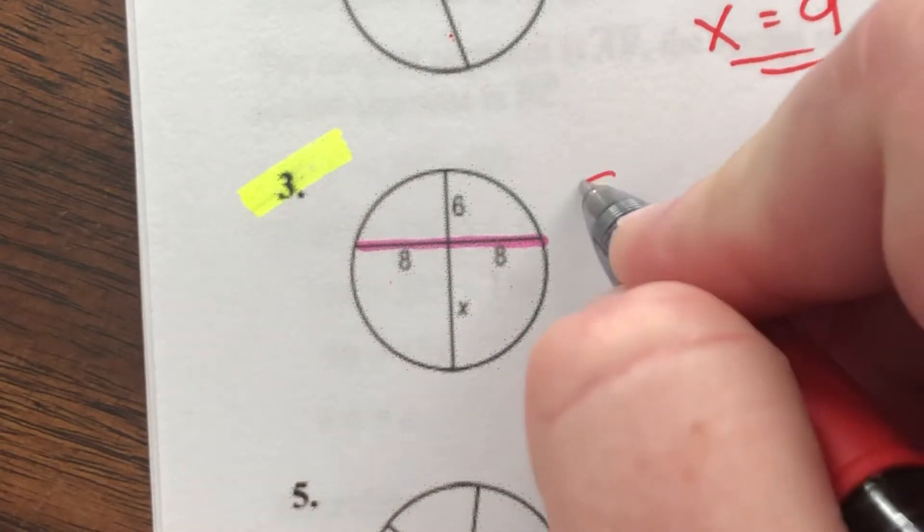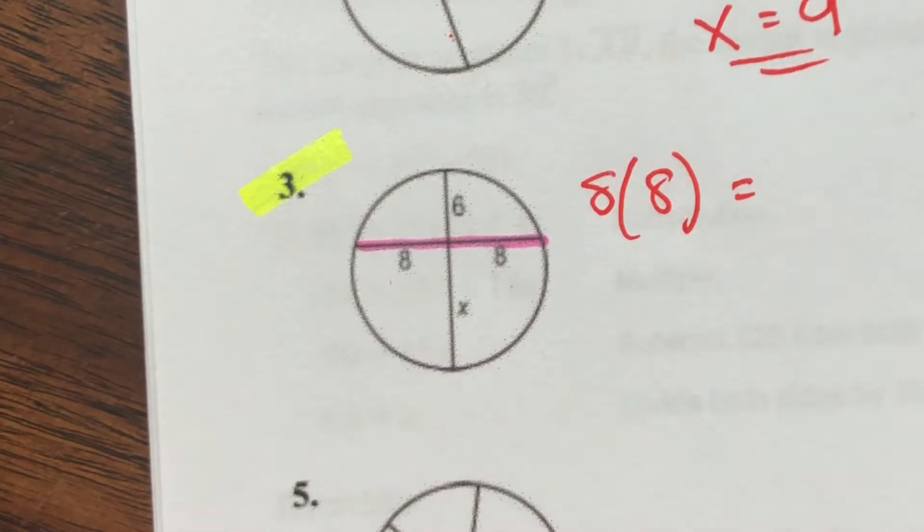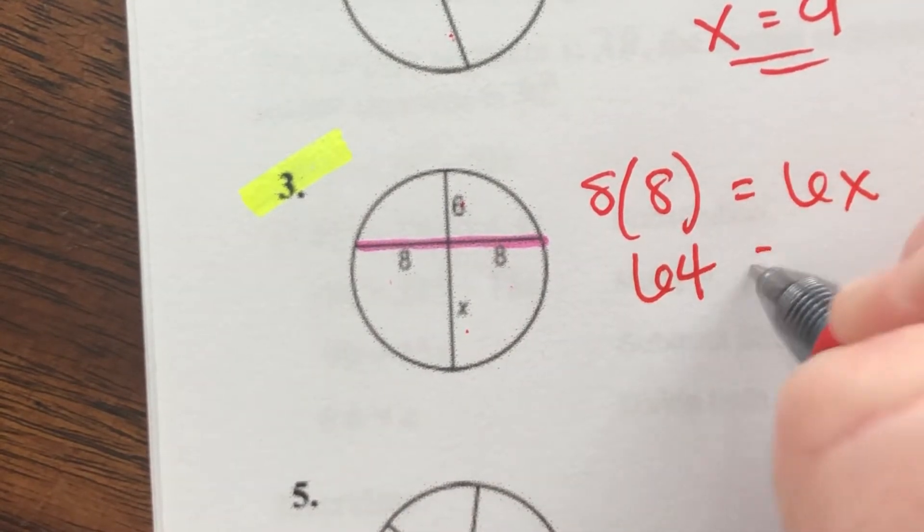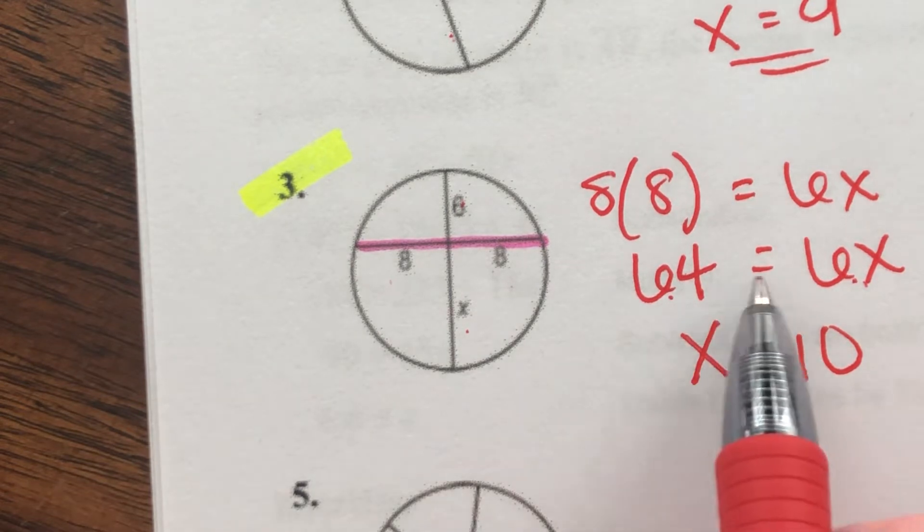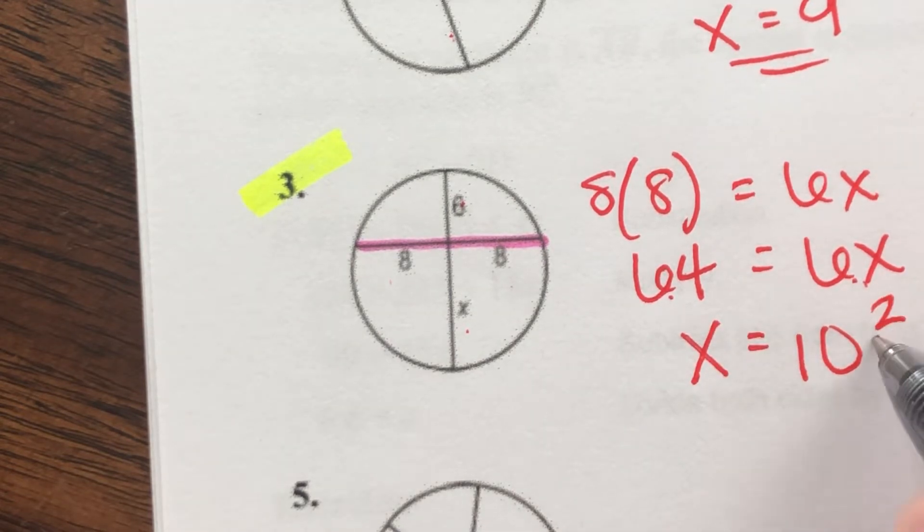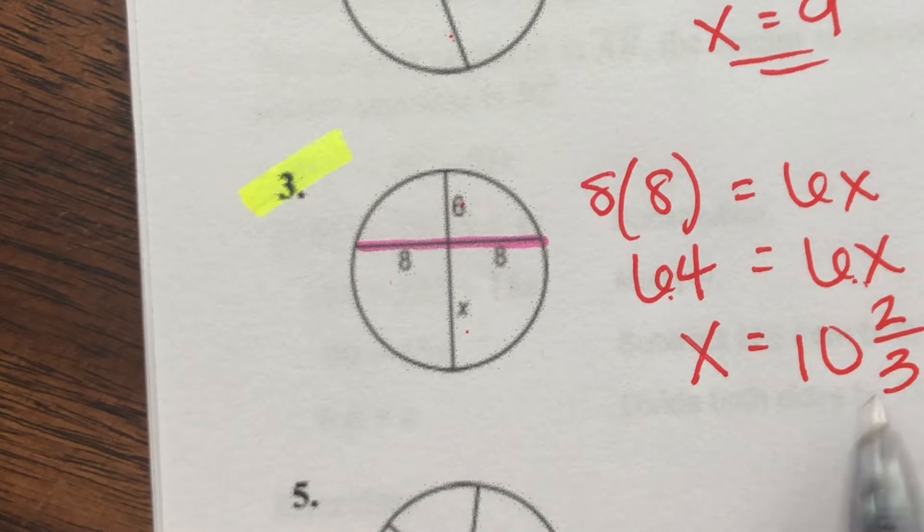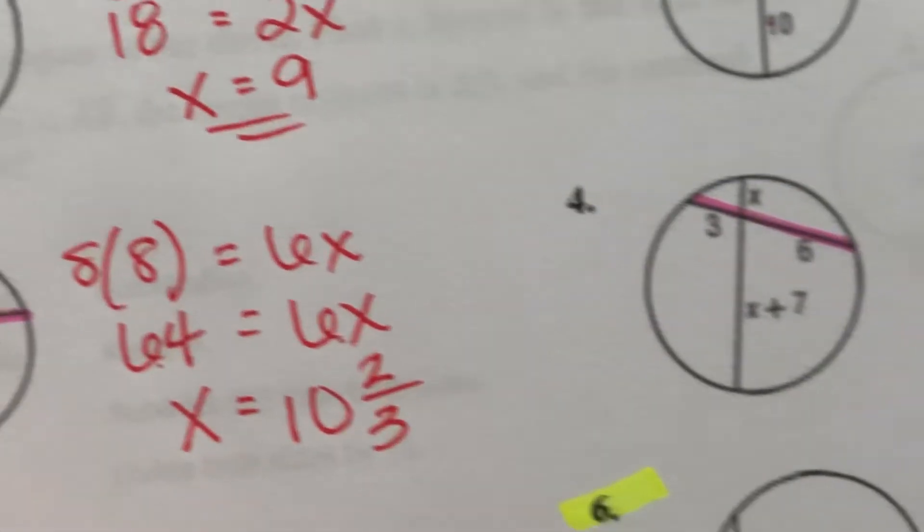Okay, so 8 times 8 should be equal to 6 times X. So that's 64 equal to 6X. Divide both sides by 6, and we will get a decimal for our answer. So you'll either get 10.6 repeating, or if you wanted to keep it in fraction form when you divide and just simplify, it's the same thing as saying 10 and 2 thirds. 10 and 2 thirds doesn't require any rounding. If you put it in decimal form, it will. Okay, number four.